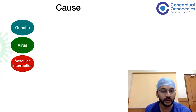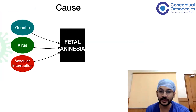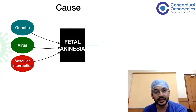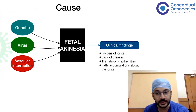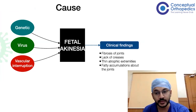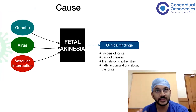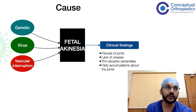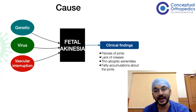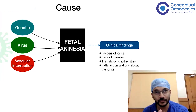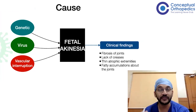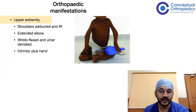Regardless of whether the cause is genetic, post-viral, or vascular, all of these lead to fetal akinesia. Fetal akinesia then leads to the spectrum of clinical findings: fibrosis of joints, lack of creases along the joints, thin atrophic extremities due to muscle mass being replaced by fatty accumulations, and fatty accumulation around the joints — giving sausage-shaped joints that are thicker at the joint but thin proximally and distally due to very meager muscle mass.